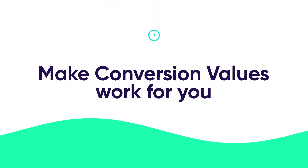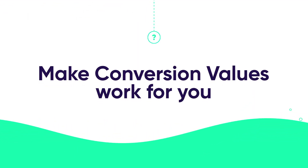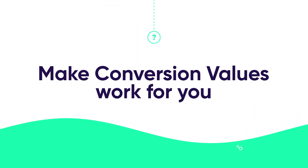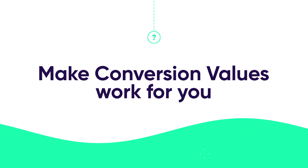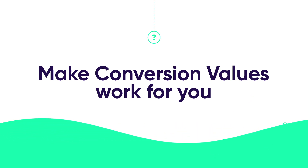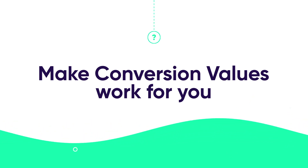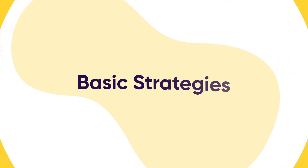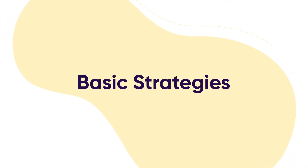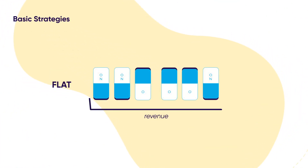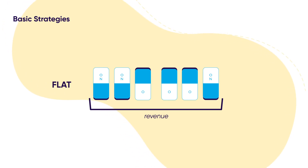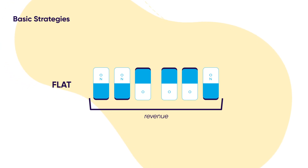We know this isn't easy to understand, so let's take a look at how you can make conversion values work for you. Let's keep it simple to start. Here are some basic strategies. First, you can go flat — with this method, all 6 bits measure 1 KPI. In this example, the app developer is using all 6 bits to measure revenue.